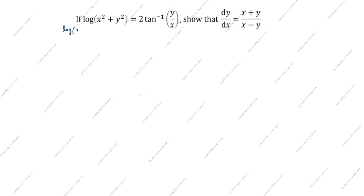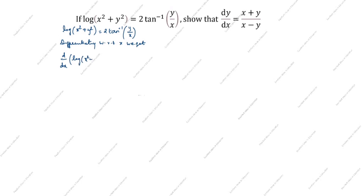What is given: log(x² + y²) = 2·tan⁻¹(y/x). Next, differentiating with respect to x, we get d/dx of log(x² + y²) = d/dx of 2·tan⁻¹(y/x).